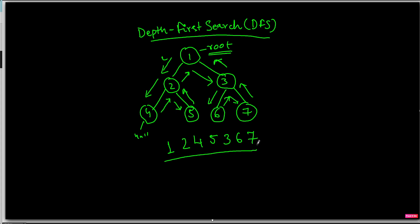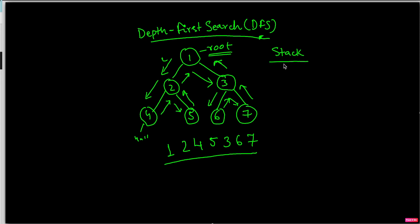So this is our DFS for this given binary tree. Whenever we talk about DFS — whether it's a binary tree, a graph, or a 2D matrix — we always use a stack. We know what a stack is: stack follows last in first out, meaning the last element that goes into the stack comes out first.